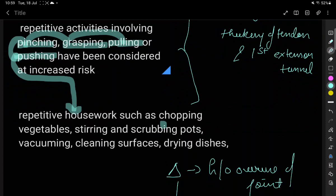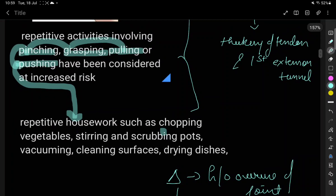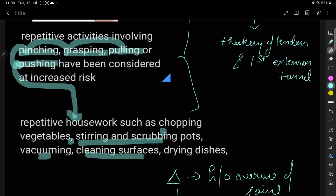We have vegetable chopping, we have stirring using the extensor tendon as well as holding it, we have scrubbing pots, vacuuming, cleaning surfaces, drying dishes. All these household works somehow involve the abductor and the extensor pollicis brevis tendon of the thumb.